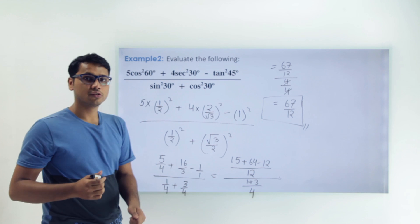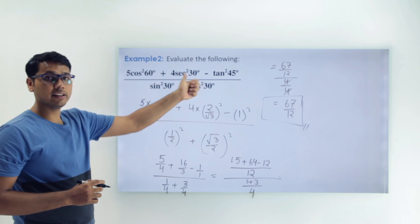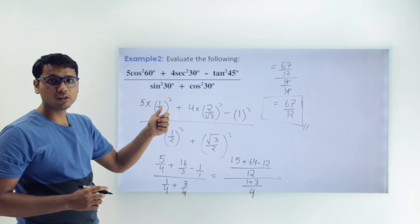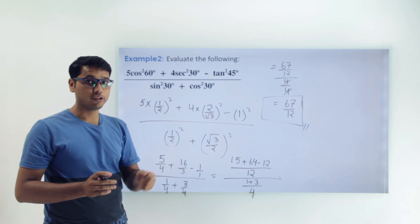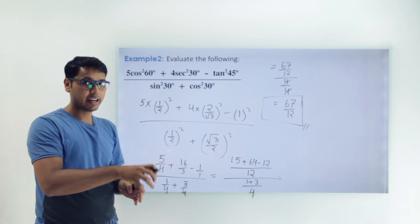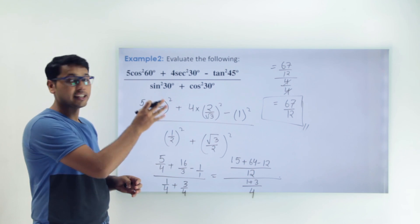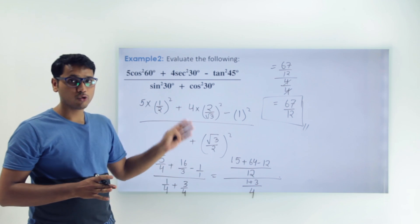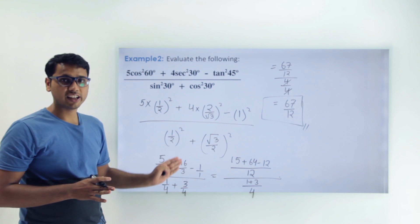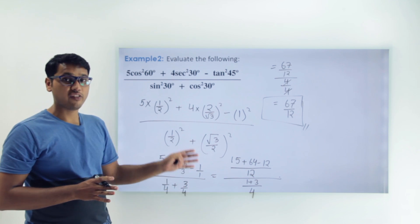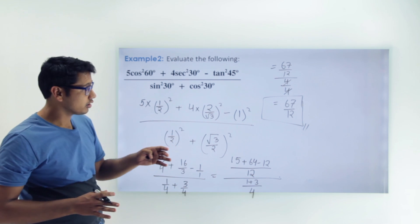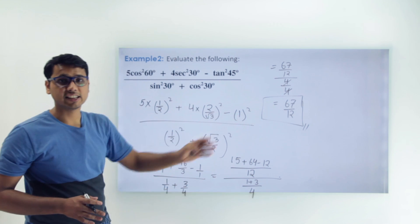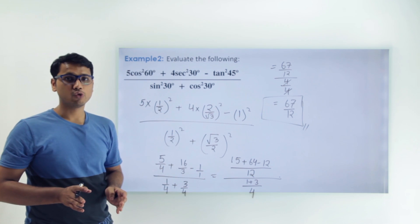Basically, we took the expression, substituted values from the trigonometric table, calculated the whole expression step by step, and finally got the value of the expression to be 67/12.